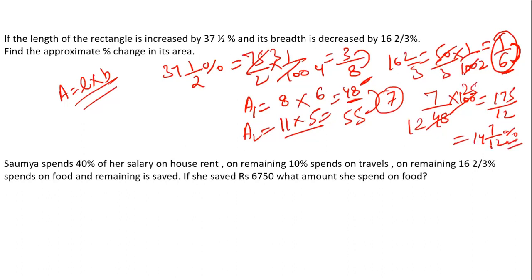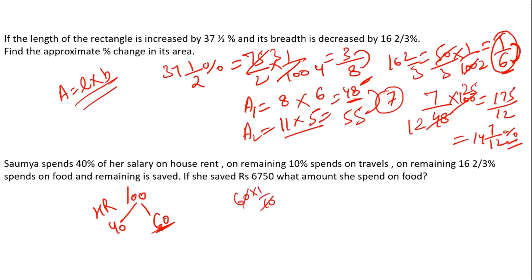The next question: Somya spends 40 percent of her salary on house rent. Let's suppose her salary is 100, so 40 percent of 100 is 40 — that's spent on house rent. The remaining is 60. On the remaining amount, she spends 10 percent on travel, which is 10 percent of 60 = 6. So 6 is spent on travel, leaving 54 remaining.